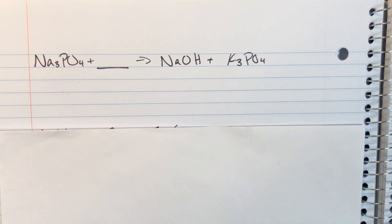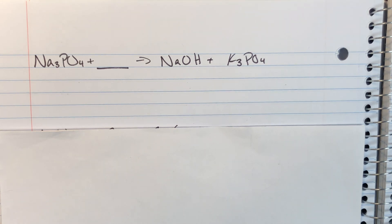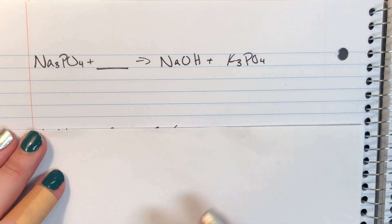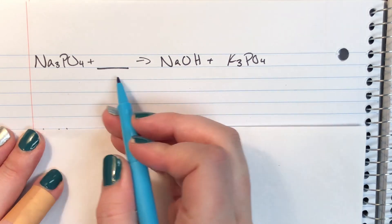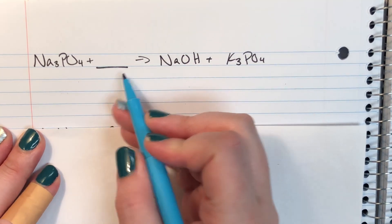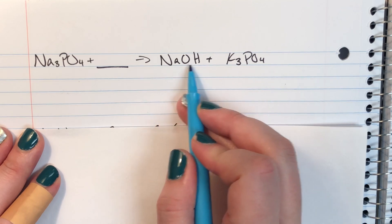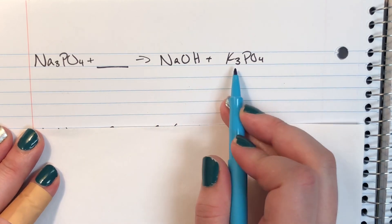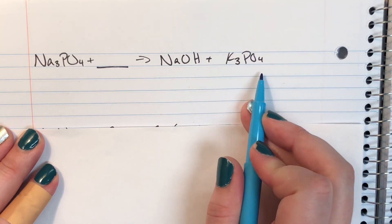We're going to practice predicting missing components of chemical reactions and chemical equations. Here I have sodium phosphate reacting with something unknown, and it's going to produce sodium hydroxide and potassium phosphate.